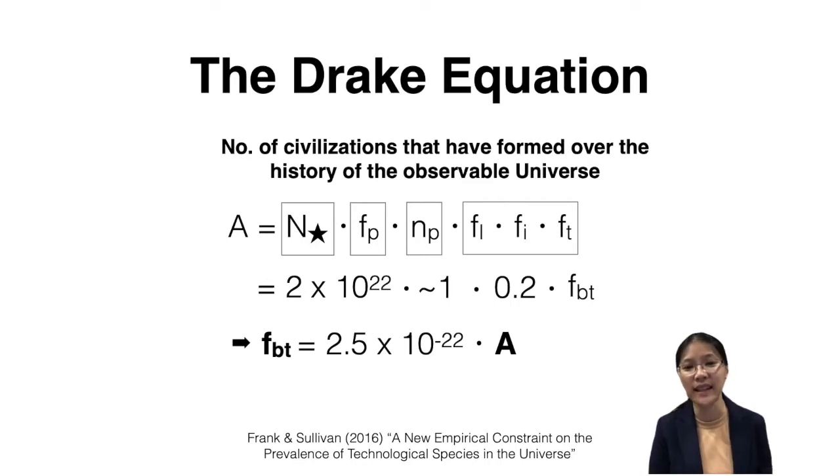And what this tells us is that it really boils down to this factor. If this f sub bt is a very, very small number, then you can actually end up with one scenario. And if this f is not a very small number, that is it's not very hard or very rare to make life, intelligent life, and technology, then you get another scenario.